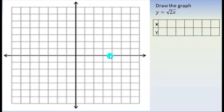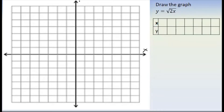Chapter 4: Functions and Graphs. We are looking at the square root function, and we will examine the context for x.